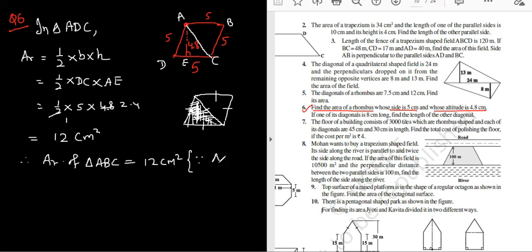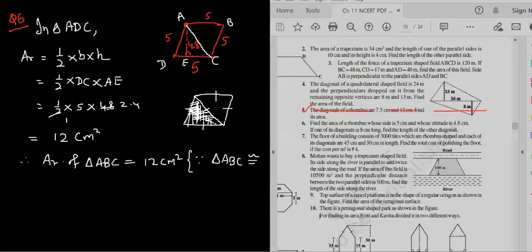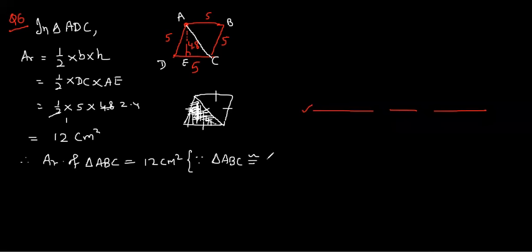Because triangle ABC is congruent to—this symbol is for congruency—ADC. Is it making sense, Vibhu? Yes.